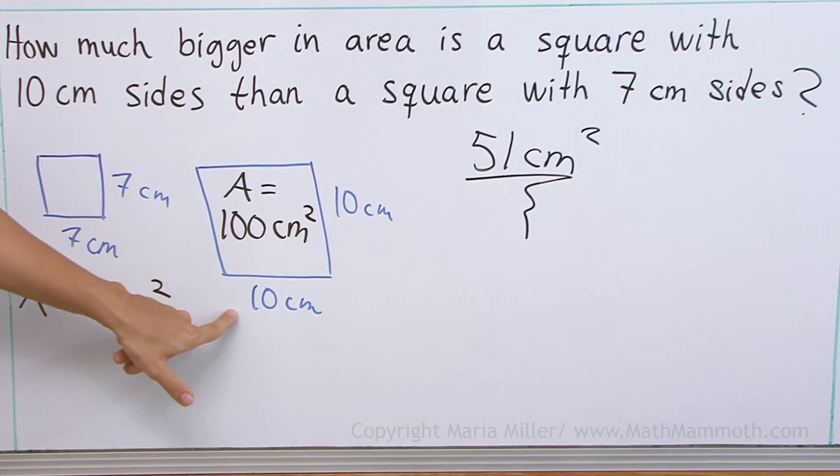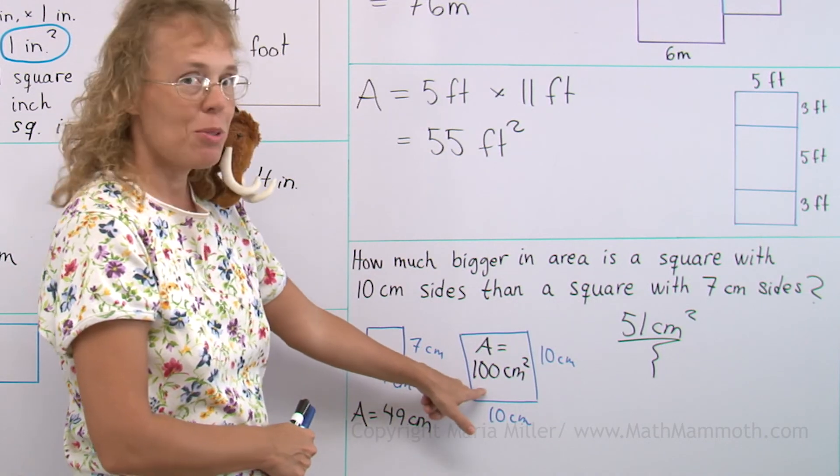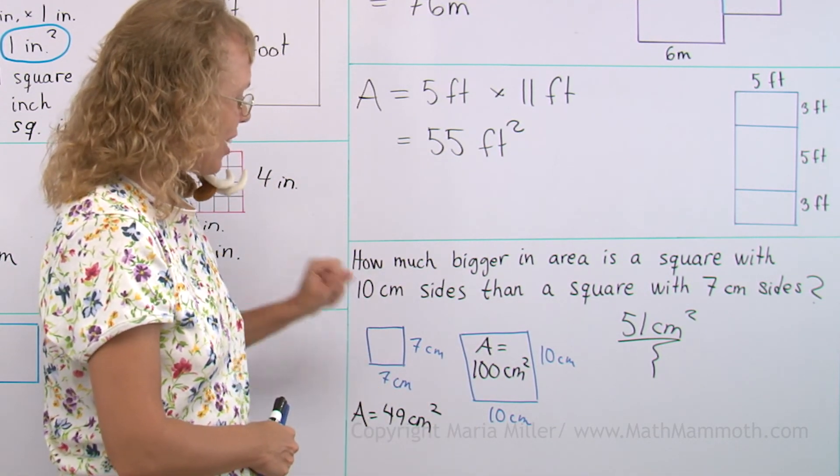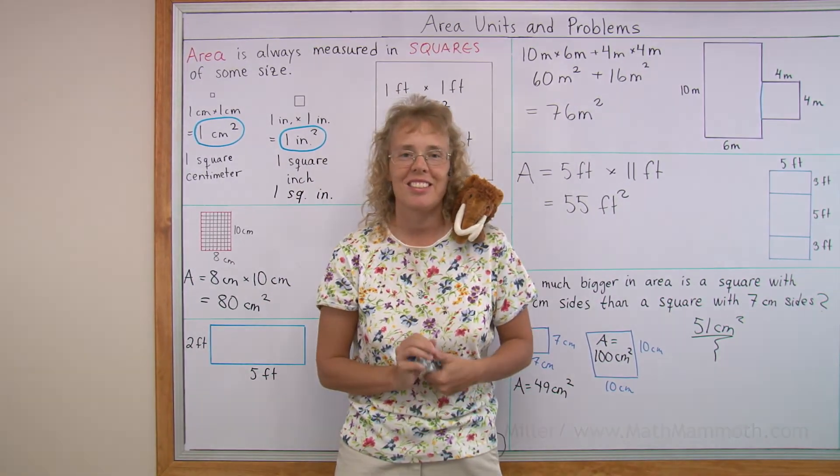But, you know, 7 versus 10. Seven and 10. 10 is not more than double 7, right? But in area, this is more than double the area of that. Okay, we're all done with this lesson. Thank you.